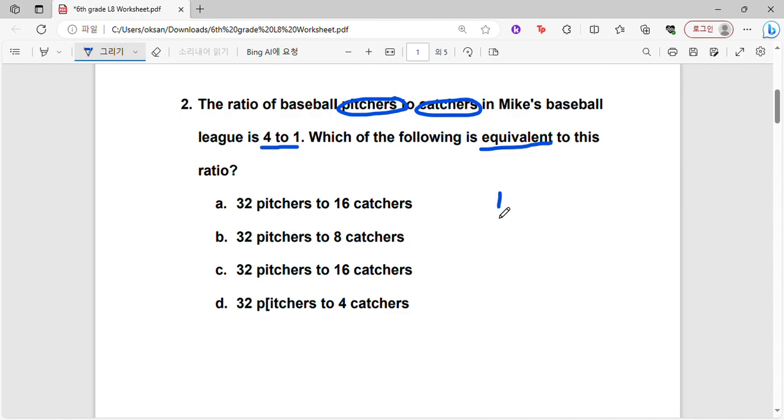Okay, so pitchers to catchers is 4 to 1. Now let's look at our options. All the options say that there would be 32 pitchers, right? So then in order to make the 4 pitchers into 32, let's multiply 8. And multiply 8 here on both sides, we get 32 to 8. So B would be the correct answer.